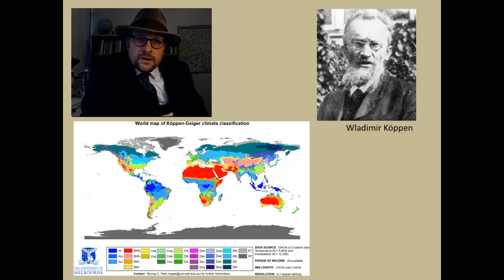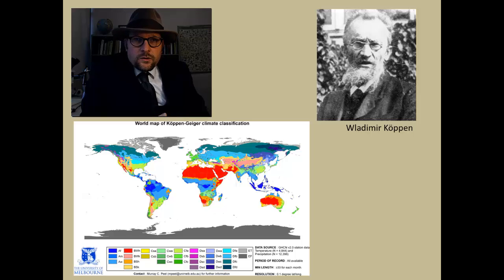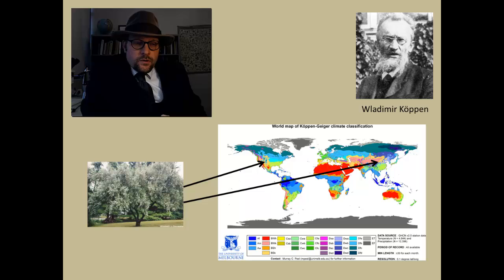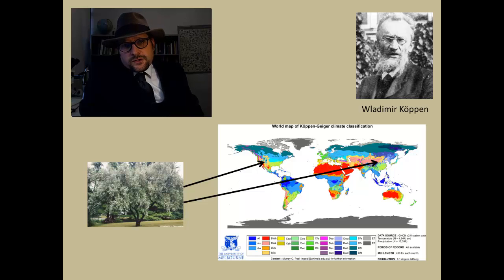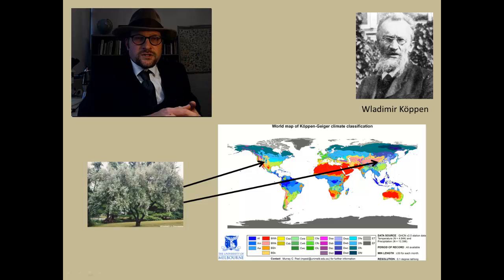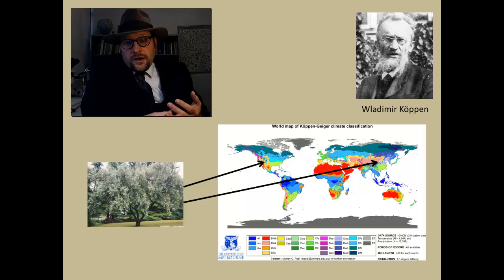Vladimir Koplin came up with a classification system that is still used today to group the world into various botanical climates, or regions supportive to various plants. For example, this is the Russian olive tree, and if you live anywhere in the American West you have likely seen this plant, which is an invasive plant brought over from Asia where it grows on the Russian steppes. It is well adapted for the harsh hot and dry summers and the freezing cold temperatures of the Russian steppes, as well as here in the American West. Hence, it is found in the same Koplin classification zone, shaded in pink, and you will notice there is the same classification over here in North America as in the Russian steppes.